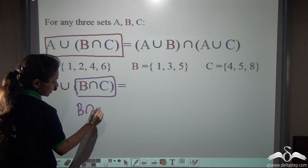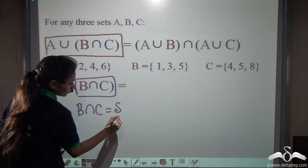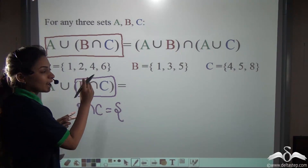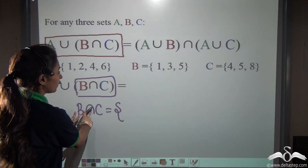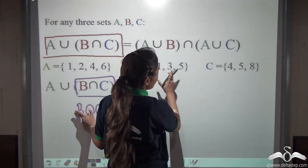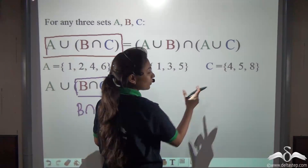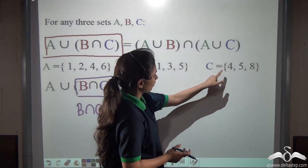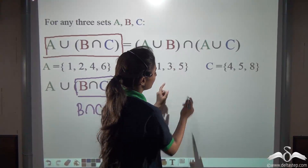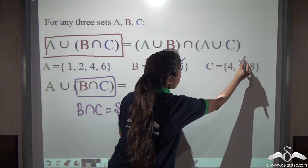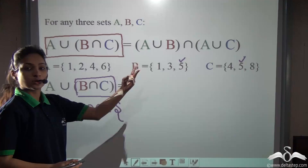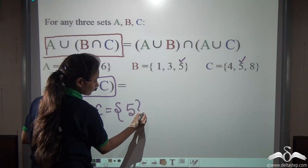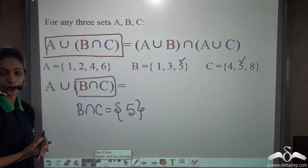First, let us find out the bracket part. B intersection C — intersection means taking out the common elements present in both. Looking at B and C: 1 is not in C, 3 is not in C, 5 is present in both. So only 5 is present in both B and C. Therefore B intersection C = {5}. Now we have to unite this with set A.